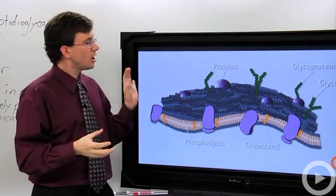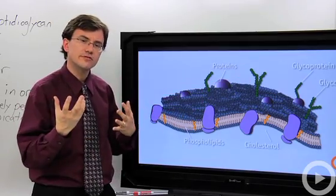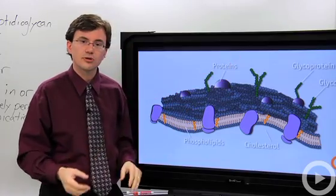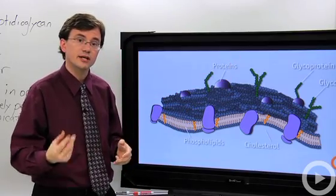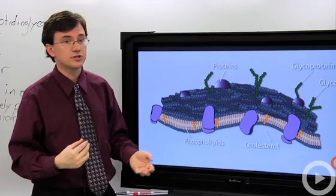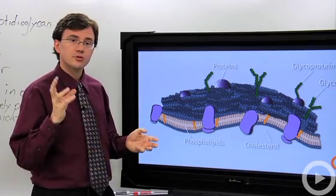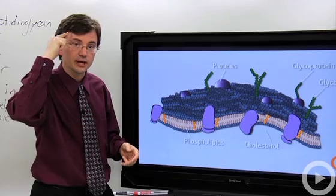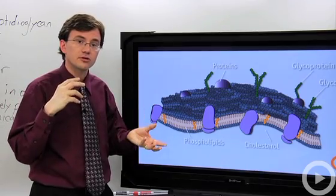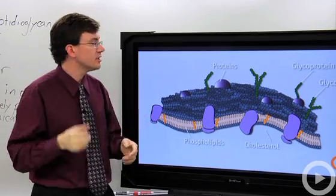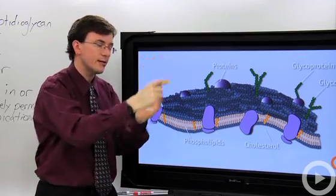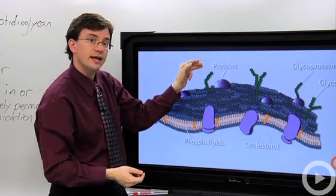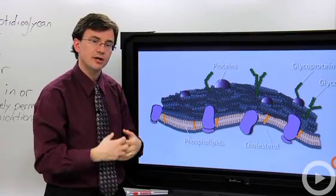Your white blood cells, for example, are constantly investigating all the cells of your body, using these proteins, glycoproteins, and glycolipids to recognize which cells belong in your body and which ones don't. And if a cell is trying to communicate with another cell — say a neuron in your brain is trying to communicate with another neuron to say, 'hey, I thought of something' — it does so by releasing chemicals through the membrane, which go to the next cell and interact with proteins on its membrane.